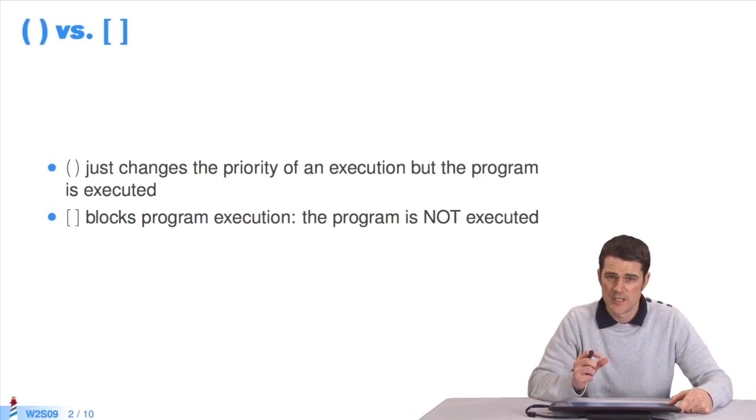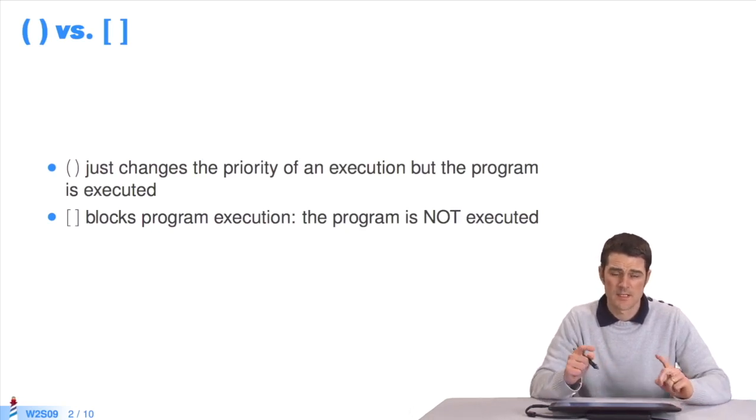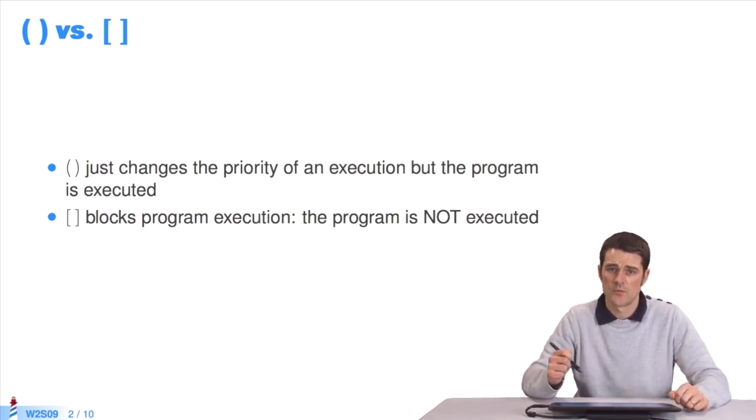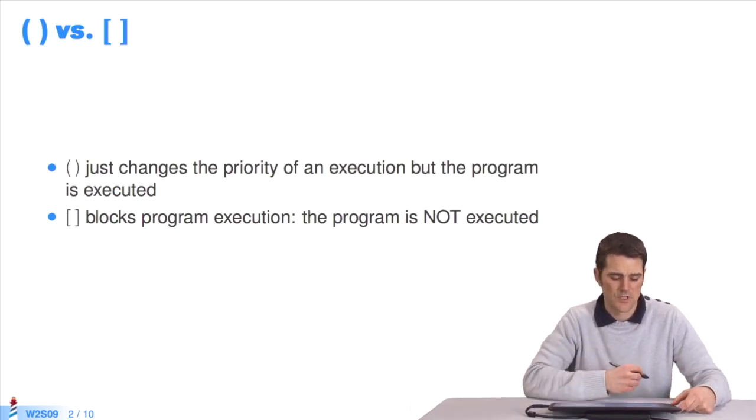Parentheses change the priority of an execution in expressions or in code, while brackets define blocks. When the expressions in a block are defined, they are not executed. You control the execution. You must send the message value to the block to trigger the execution of its expressions.